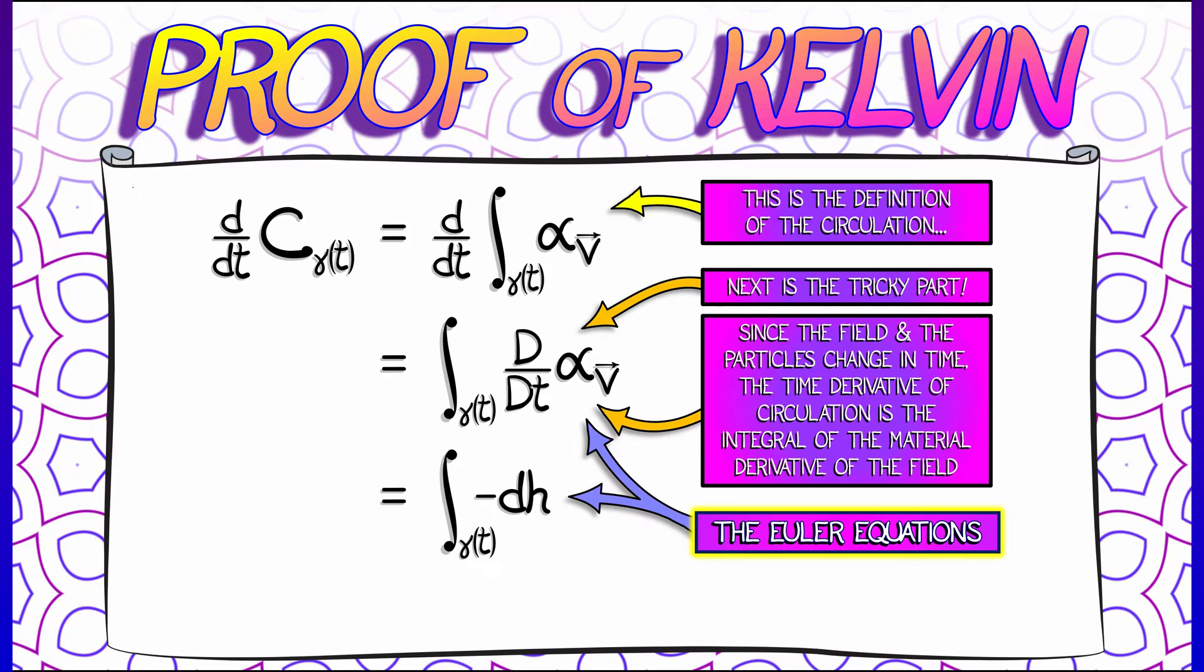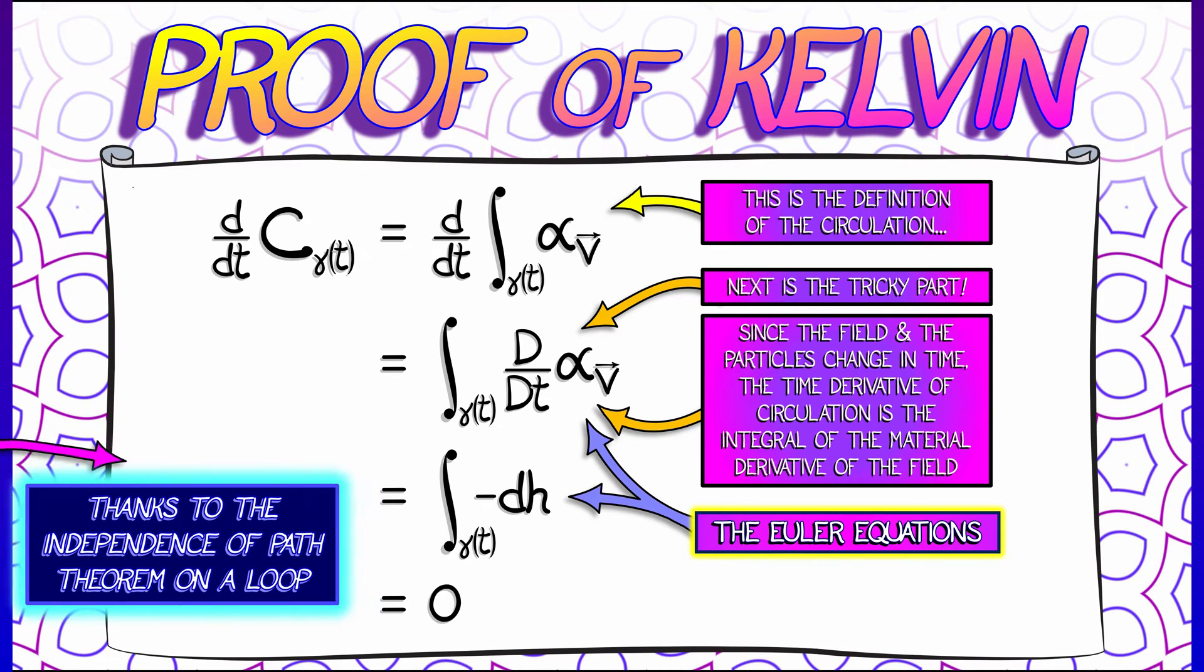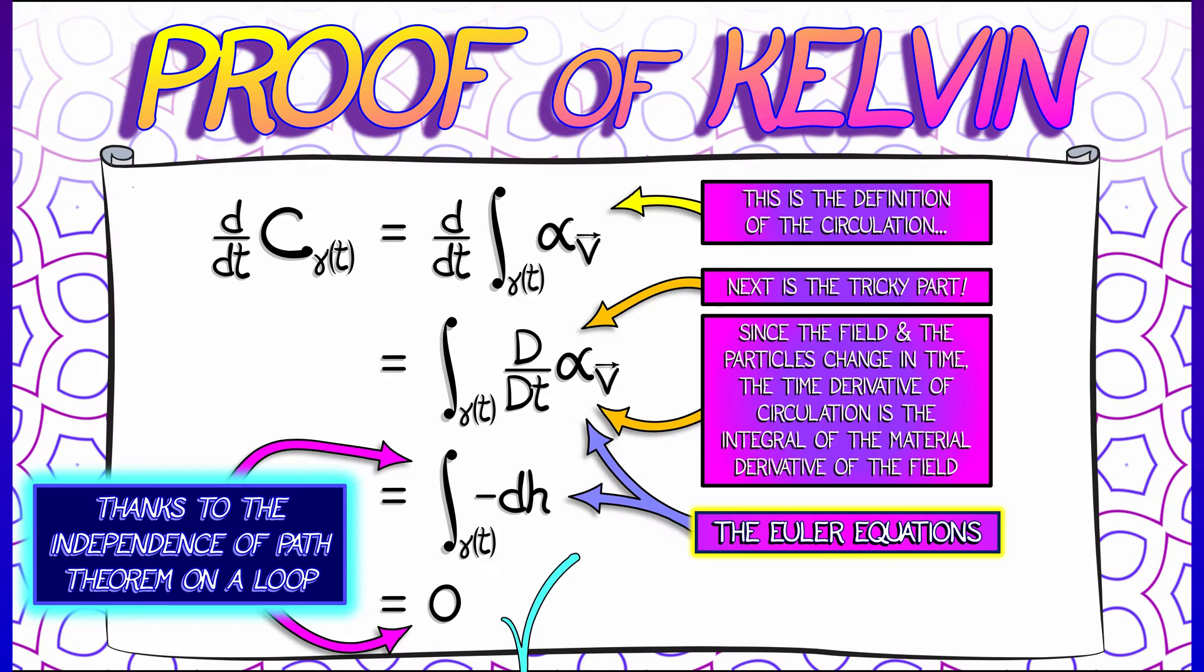What are we doing? We're integrating a gradient field along a loop, a closed loop. And by the independence of path theorem, that means that we get zero. Integrate a gradient along a loop, you always get zero.